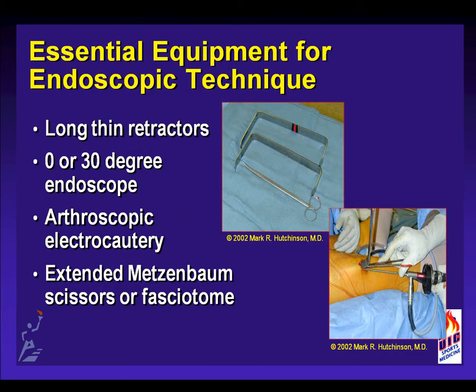Essential equipment for the endoscopic technique includes long thin retractors, a zero or 30-degree endoscope, arthroscopic electrocautery, and extended Metzenbaum scissors or a fasciotome. We modified large chest tubes, cutting a split out of them to use as a retractor, but found these difficult to place. We have found it much easier to use a long thin retractor in which the assistant pulls laterally, keeping the skin and subcutaneous tissue well out of the field. This allows us to place our endoscope up the canal and provide adequate visualization to assist in the extent of our release.